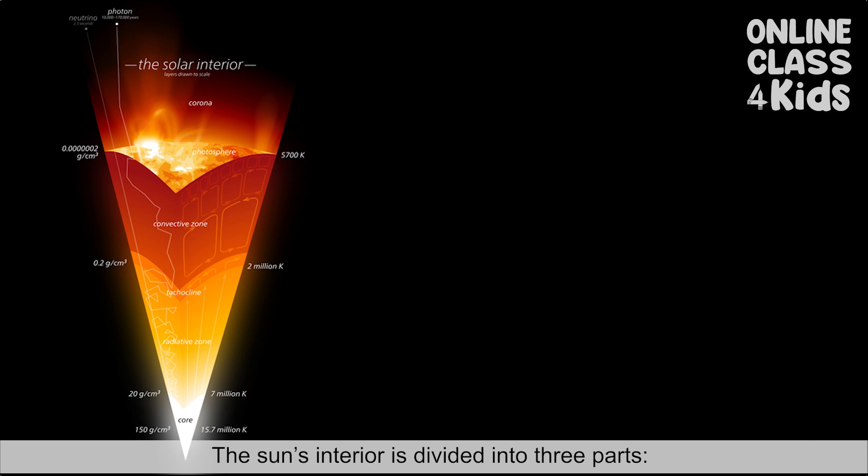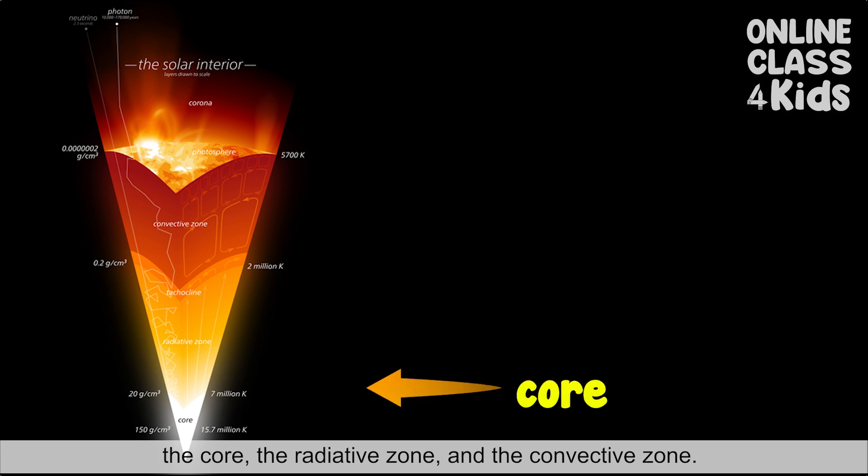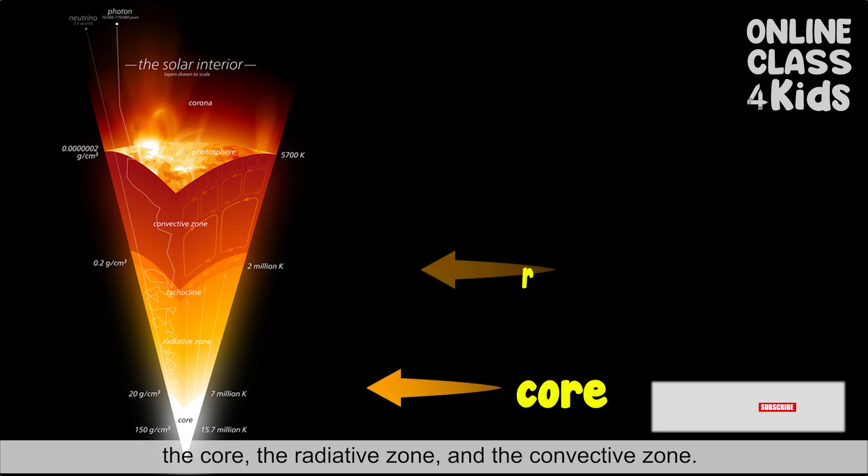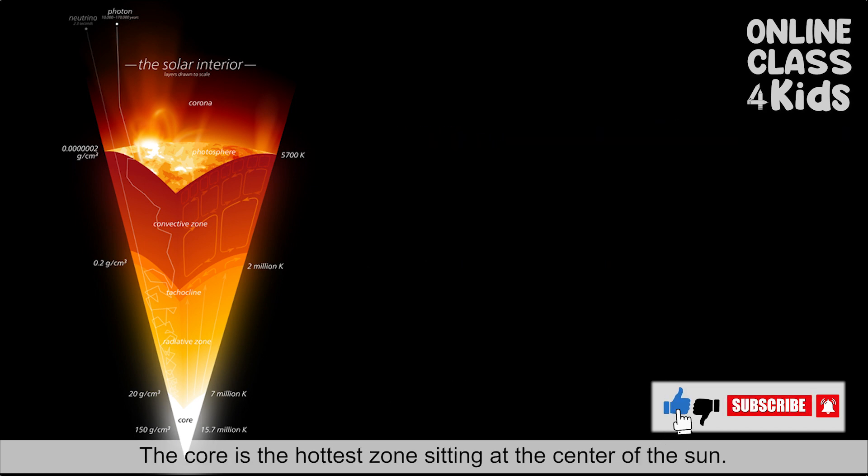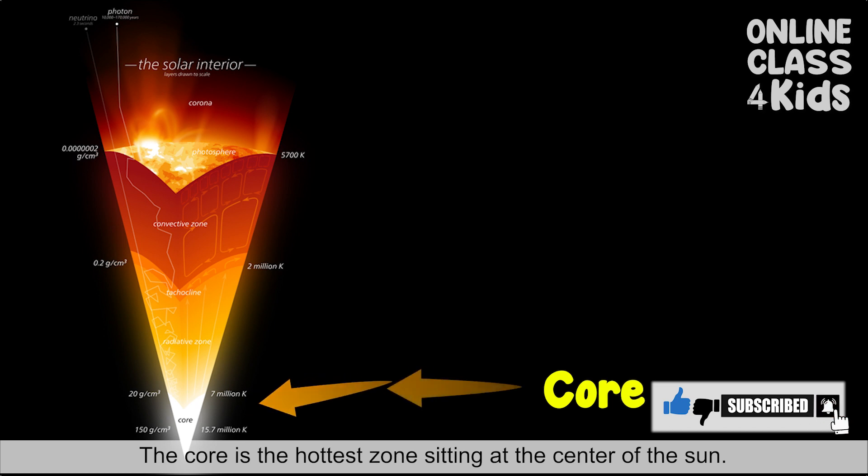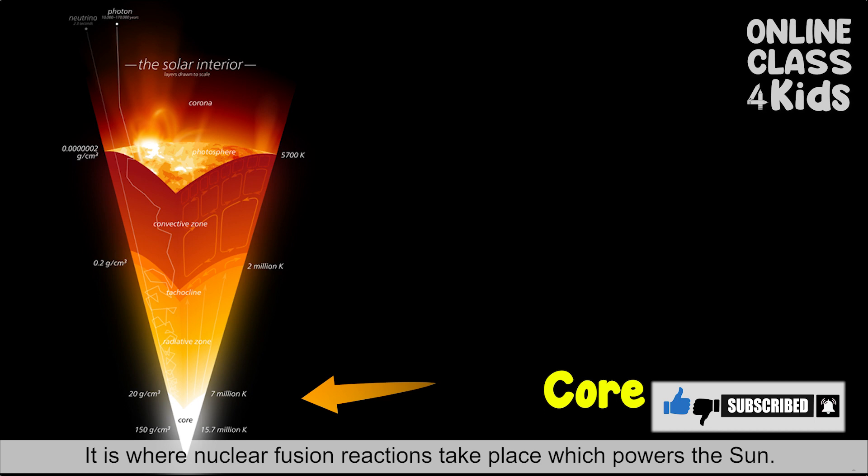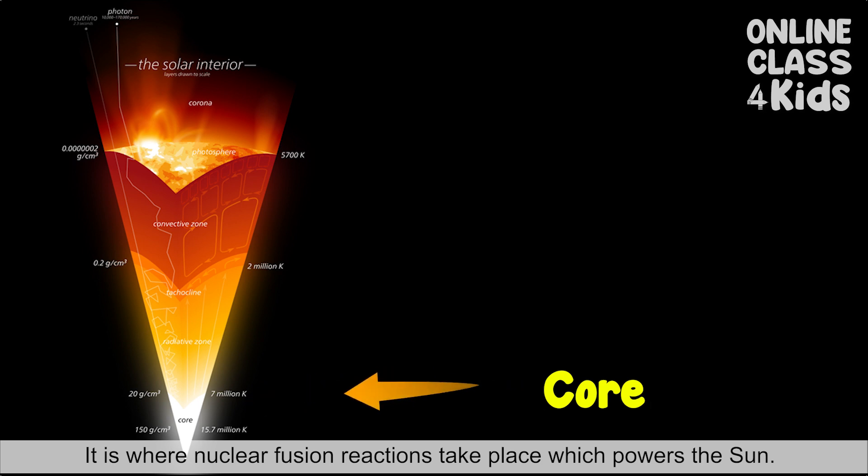The Sun's interior is divided into three parts: the core, the radiative zone, and the convective zone. The core is the hottest zone sitting at the center of the Sun. It is where nuclear fusion reactions take place, which powers the Sun.